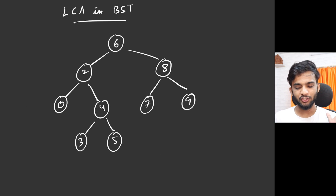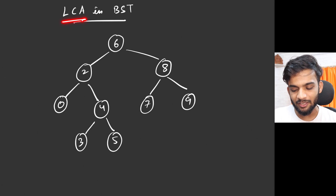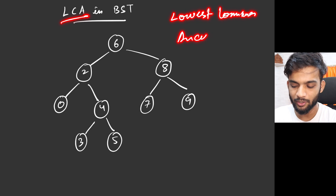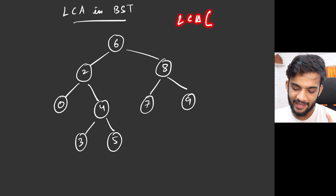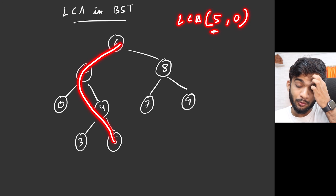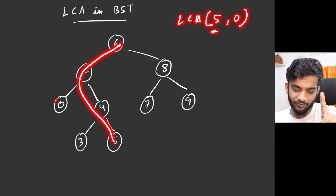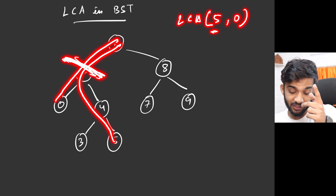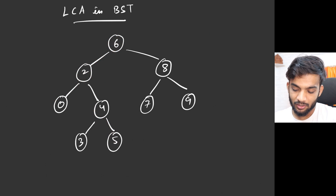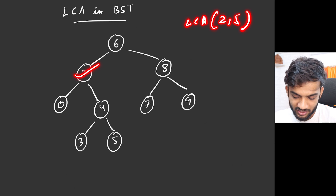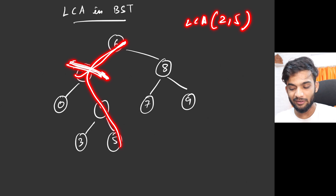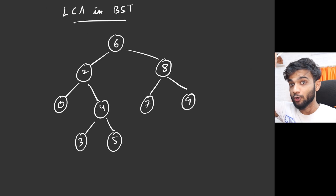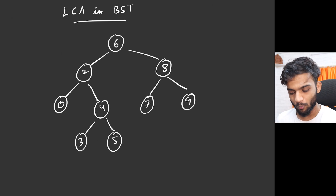If you want to know about binary search trees in depth, you can check out my entire playlist. Now, LCA stands for Lowest Common Ancestor. For example, if I ask you to find the LCA of 5 and 0 — if you draw the path of each node up to the root, the first intersection point from the bottom (or last from the top) is the LCA. Similarly, for LCA of 2 and 5, the first intersection point in their paths is the LCA.